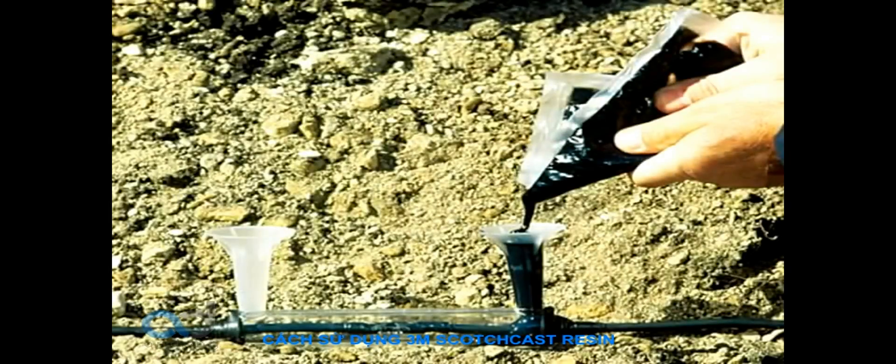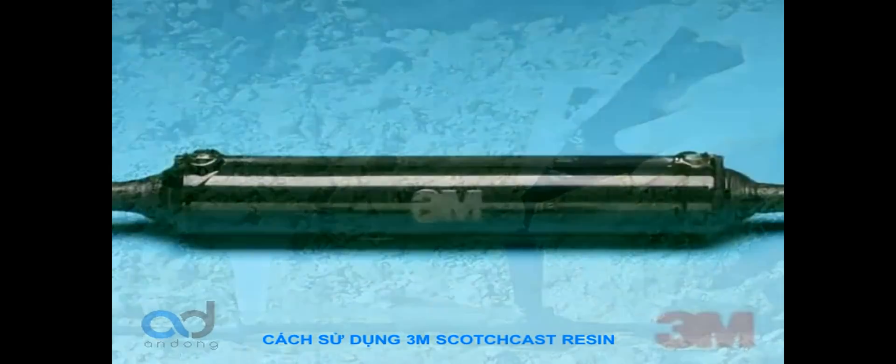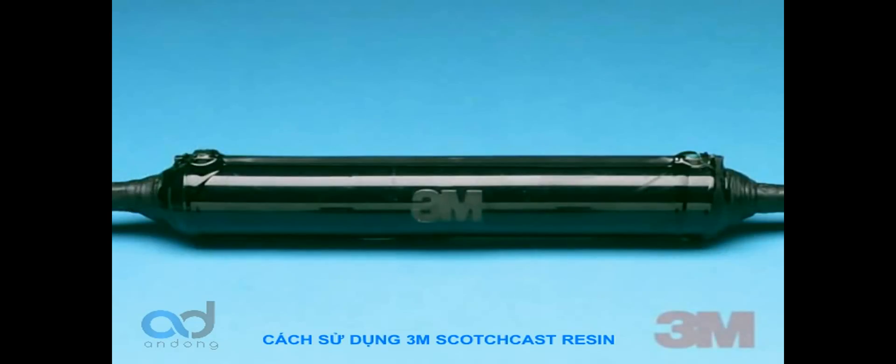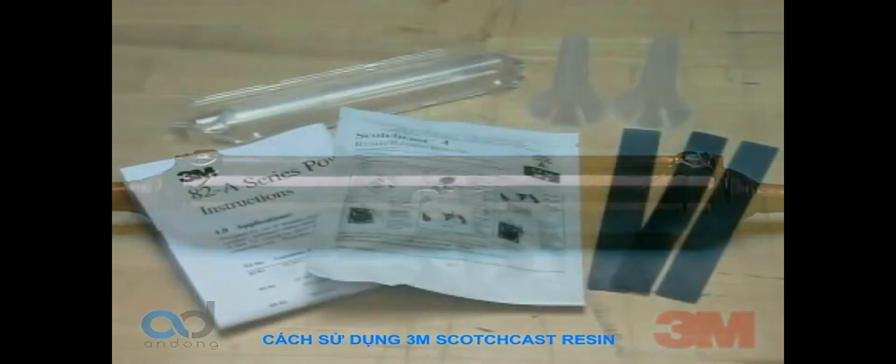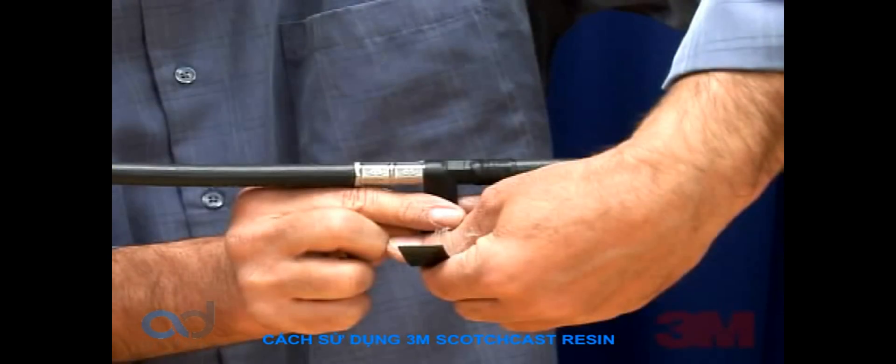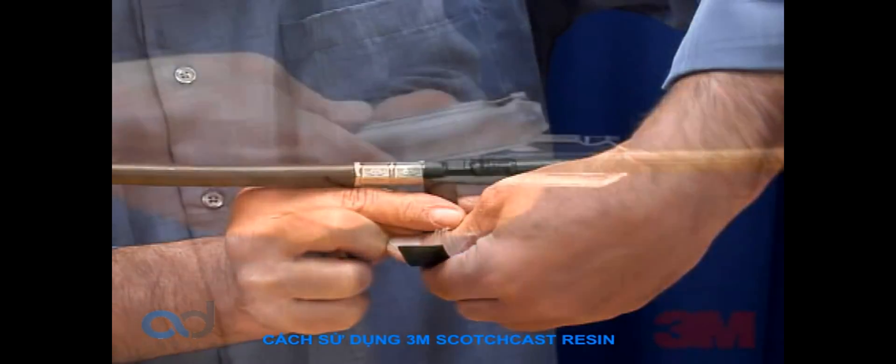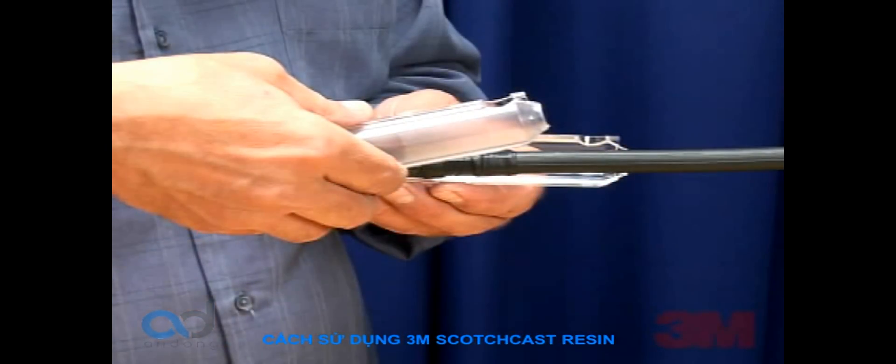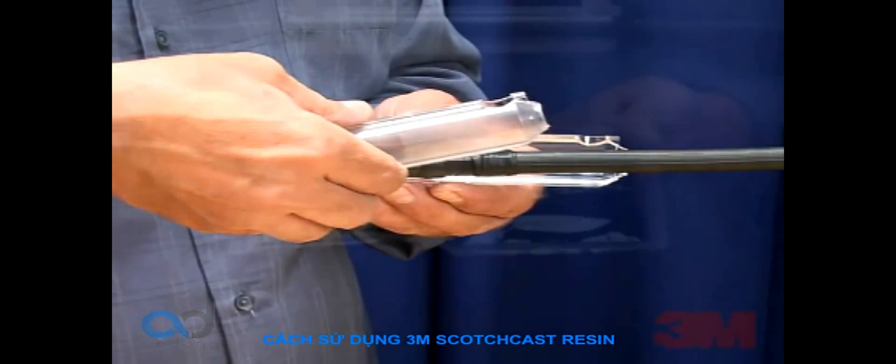Use the 3M ScotchCast brand inline resin splice kit 82A series to insulate and seal single conductor unshielded cable splices up to 5kV and multiple conductor cables through 1kV. The 3M brand 82A series is UL listed 486D file number E102356.